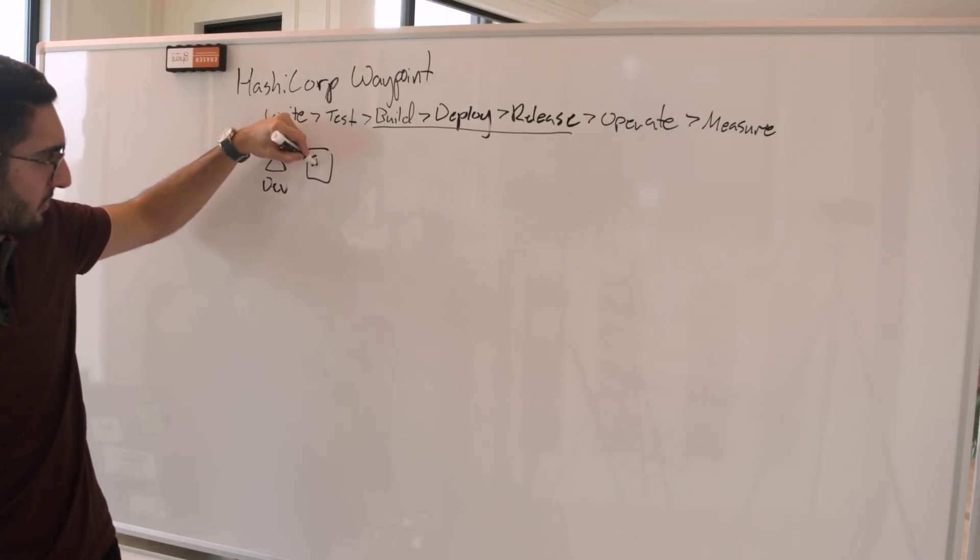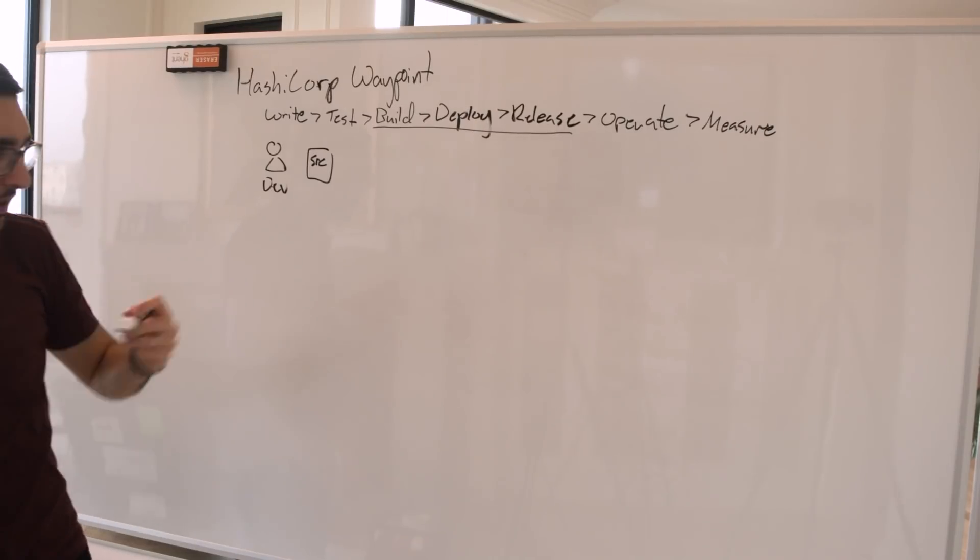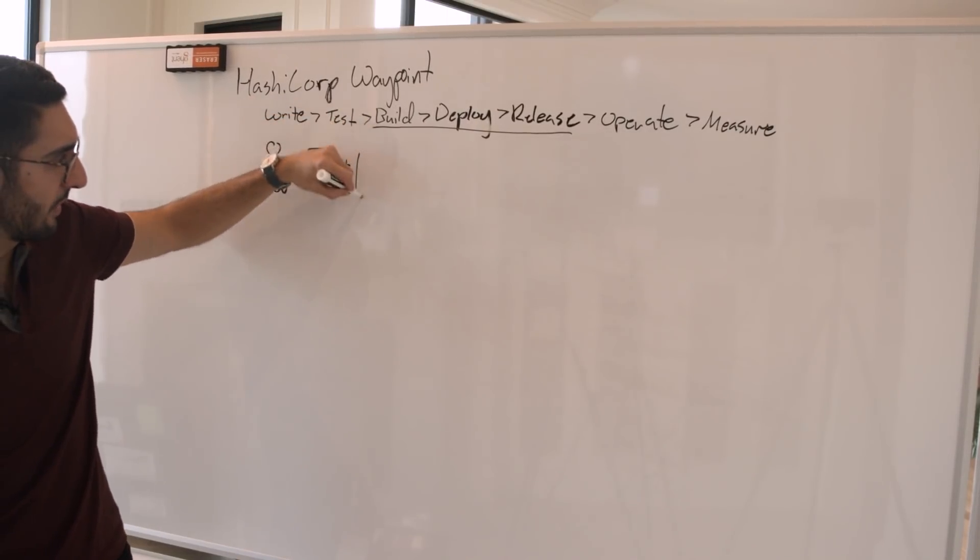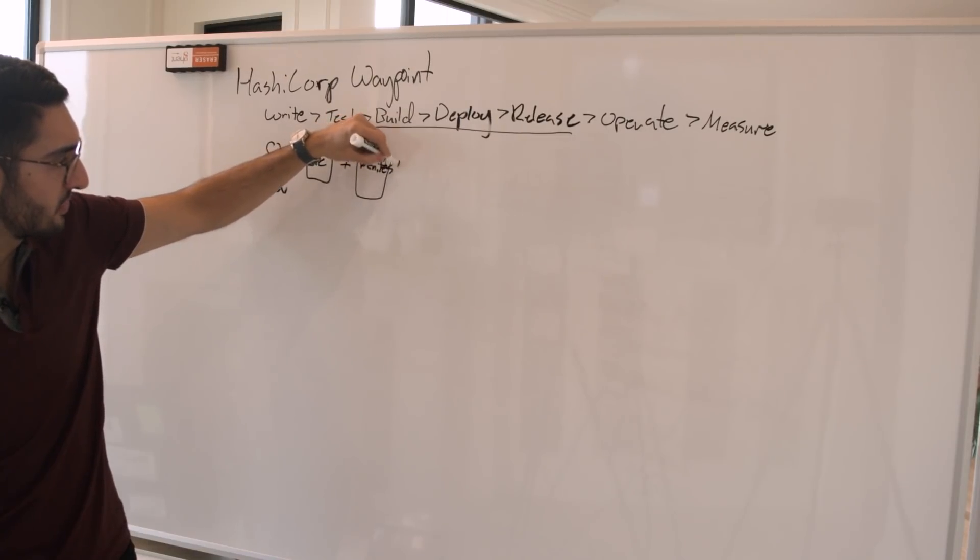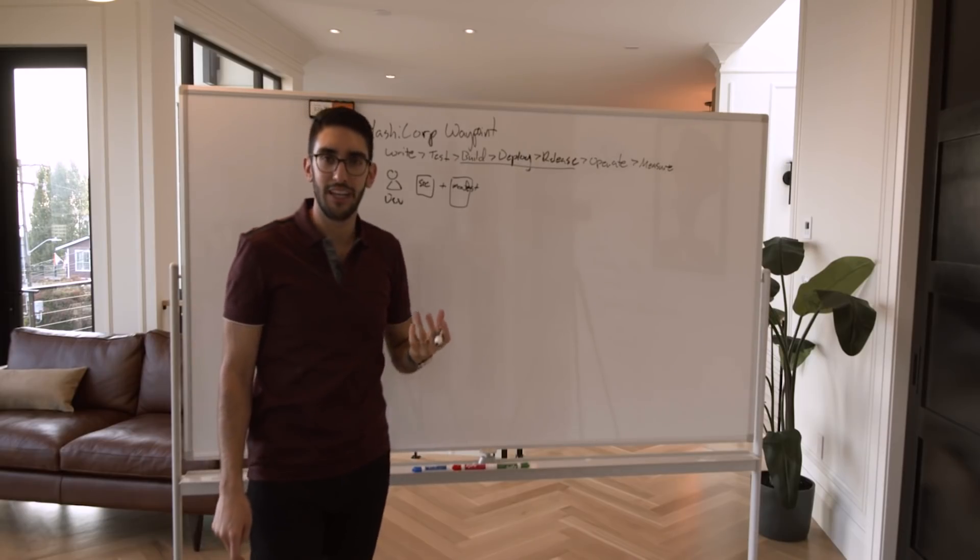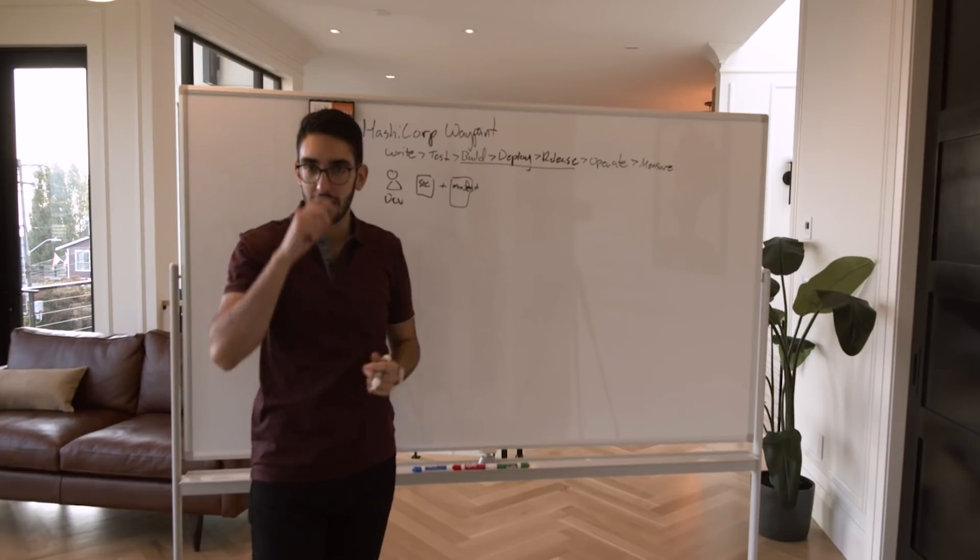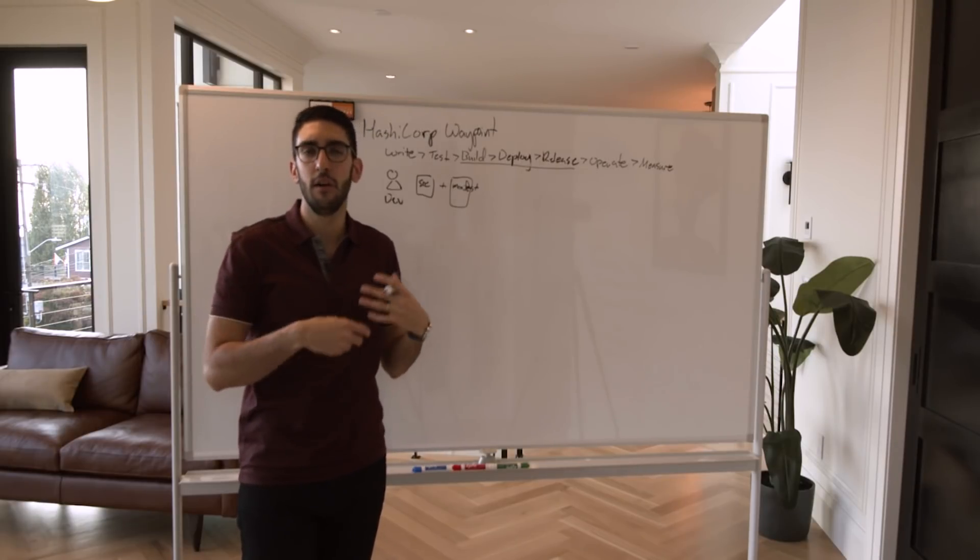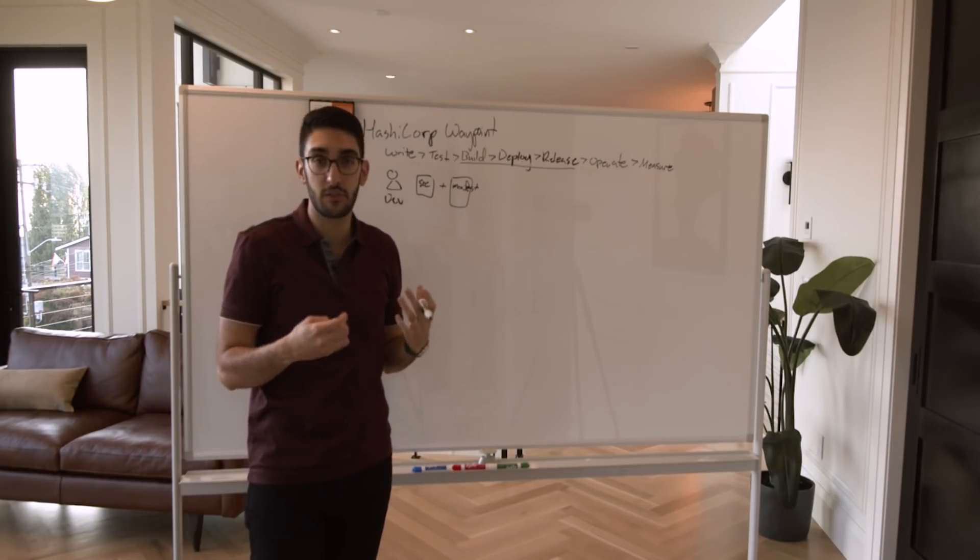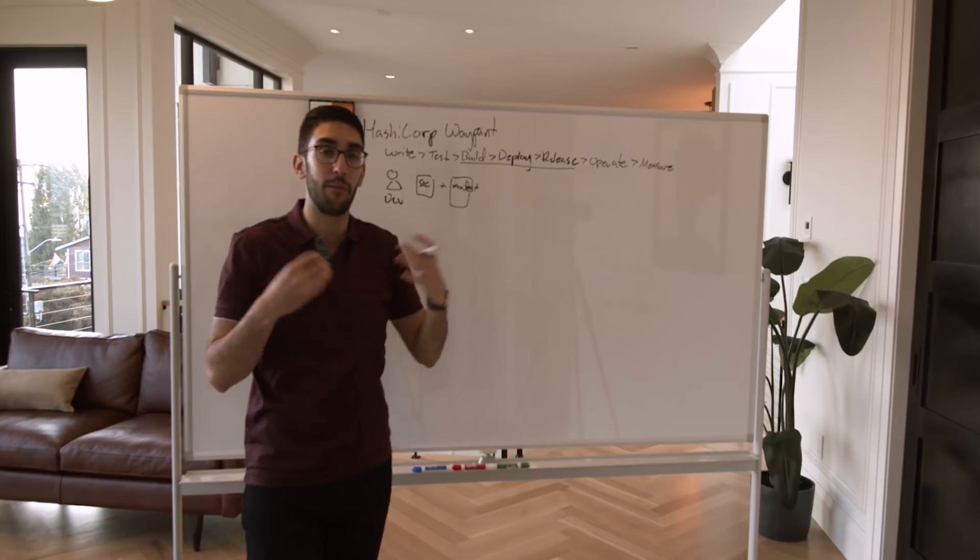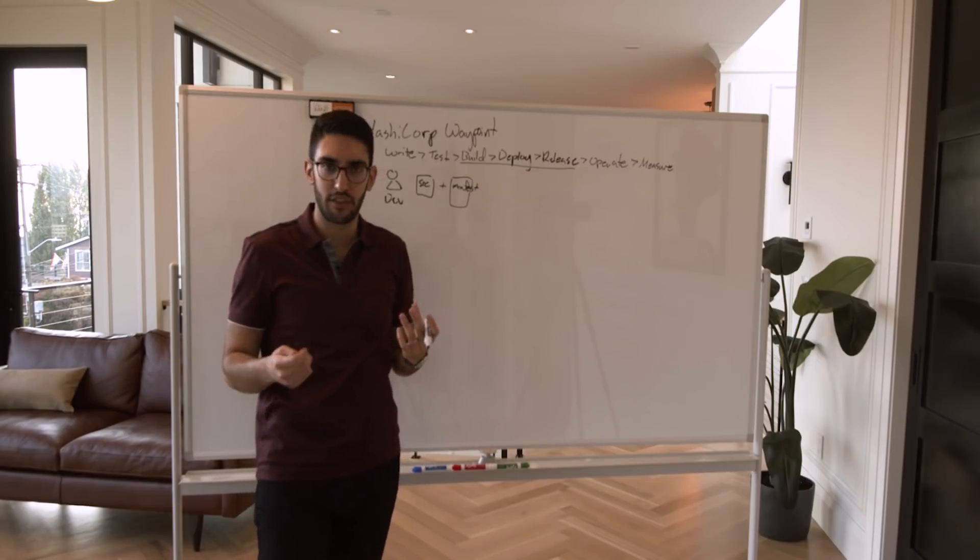So our goal, our view is how do we simplify that so that as a developer, what we really focus on is really two things. One is obviously our source code of the application. Two is a lightweight manifest. So this includes some metadata that our application needs. It's a bit of a declarative description above and beyond what would live inside of the source code. Maybe it's what region we need to deploy in or how many instances we need.